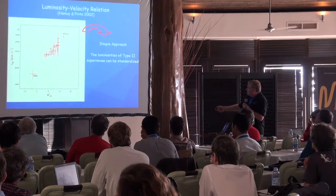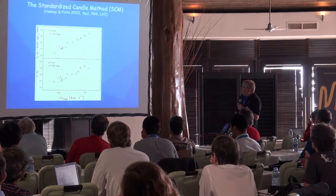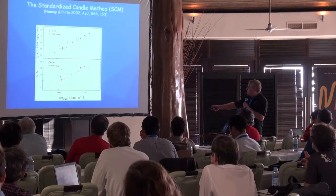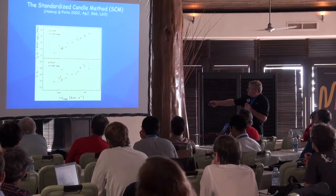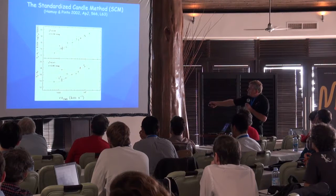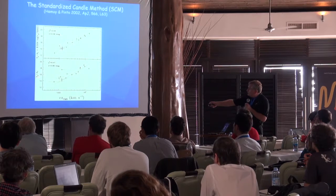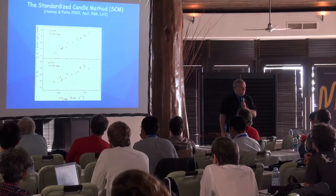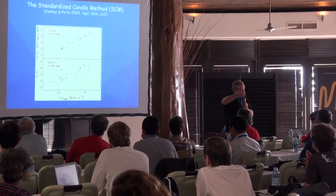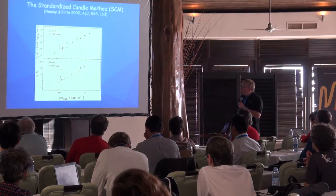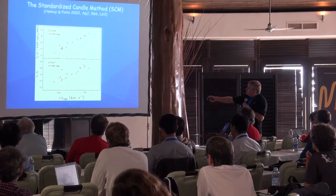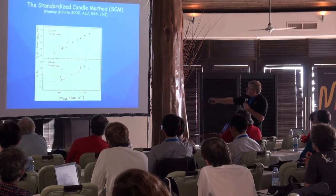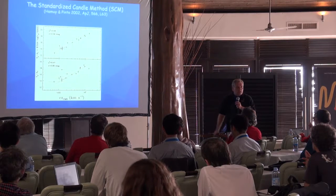We went ahead and built a Hubble diagram using this technique. We started without corrections — this is the plateau visual magnitude as a function of redshift — and you see a large scatter reflecting the dispersion in the Type II luminosity. But when you include a term related to the expansion velocity, that scatter goes down in the right direction.